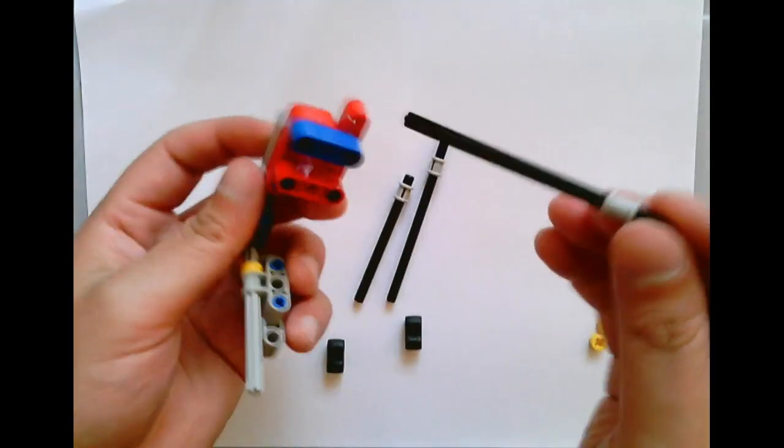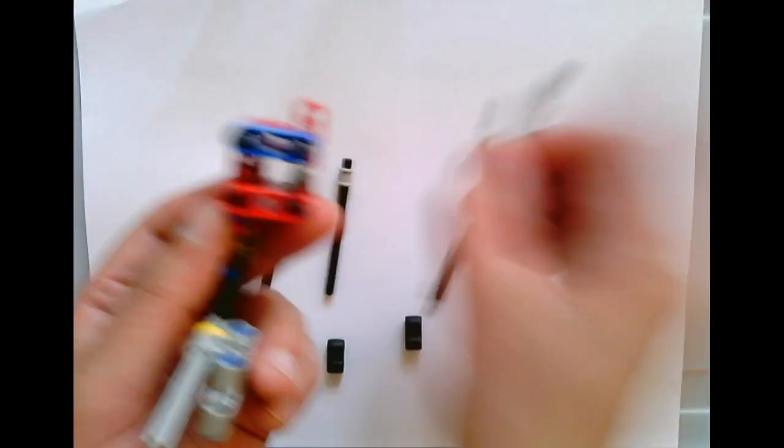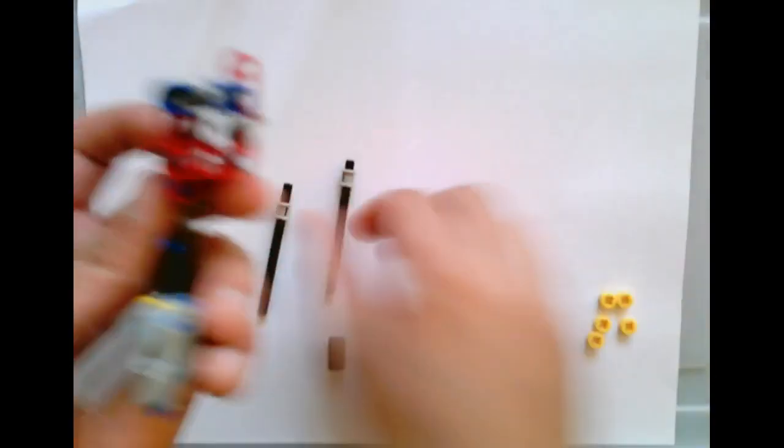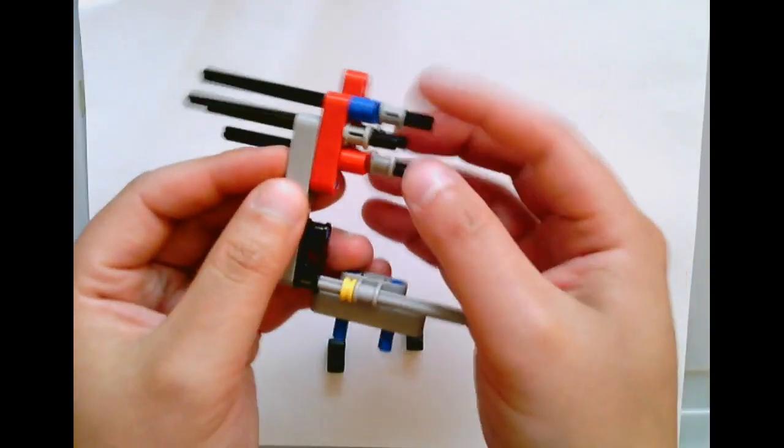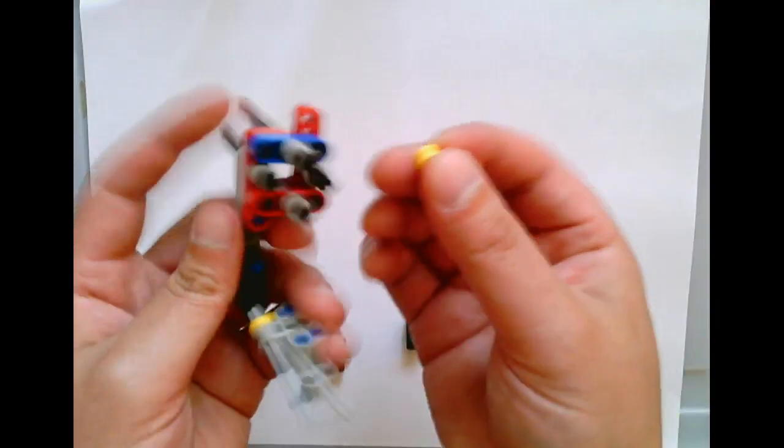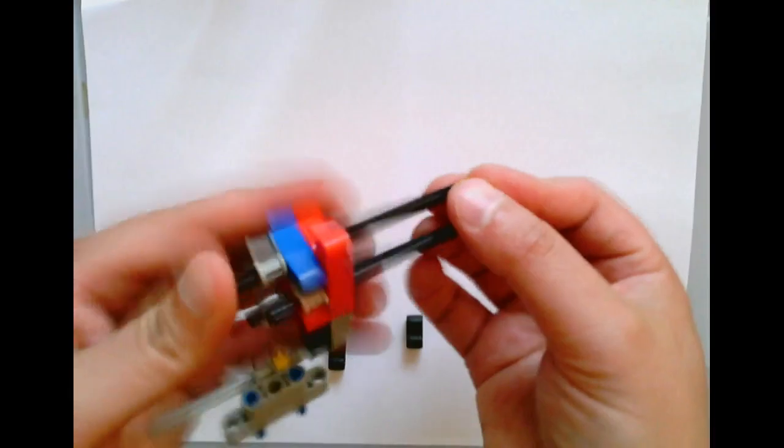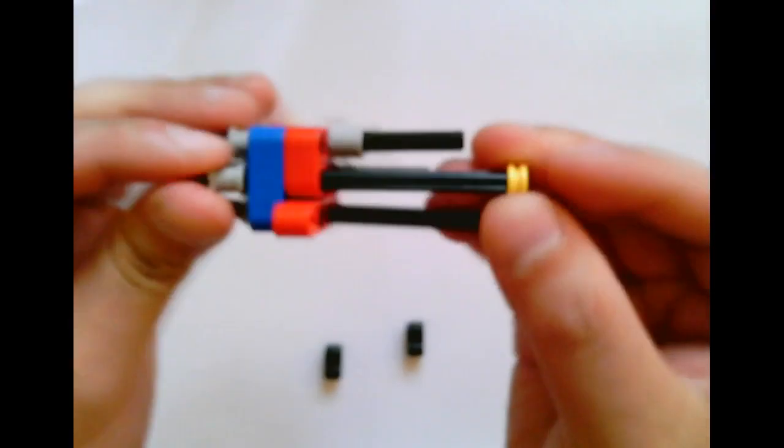Take your axles and put them one, make sure that they go through the holes. That's two, three, and four. Make sure that's lined up just like that. And then use these yellow pieces to snug them up so they don't move around like this.